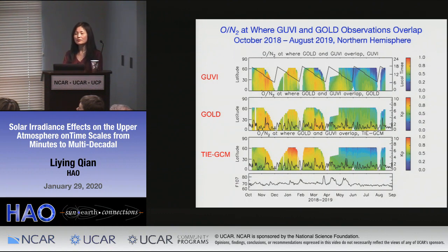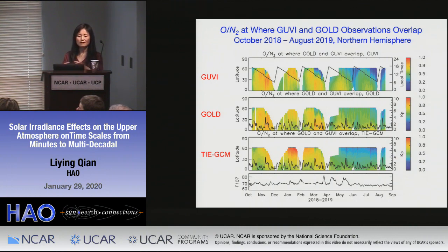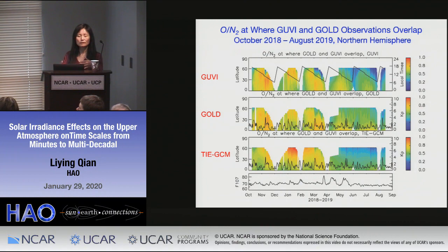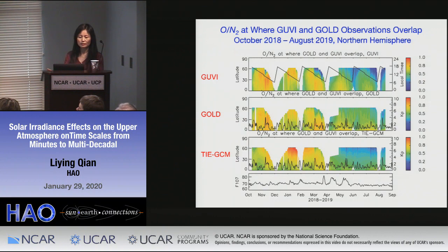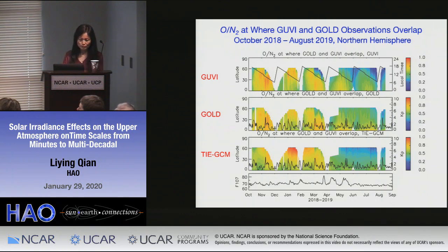The O/N2 ratio is important to thermosphere neutral density because a larger O/N2 ratio means more atomic species in the atmosphere mixture, giving a larger scale height and therefore more neutral density at higher altitude. The O/N2 ratio is also very important to electron density because in the F1 and F2 peak, electron density is proportional to the O/N2 ratio — more atomic oxygen leads to larger electron density, while more molecules increase recombination rates and reduce electron density.